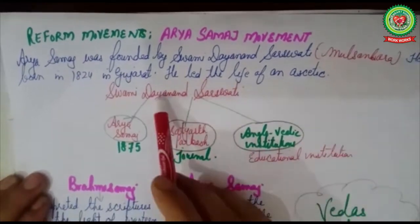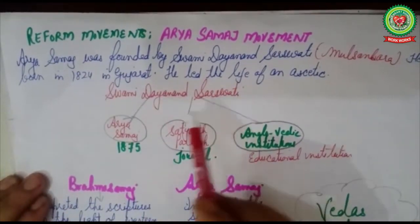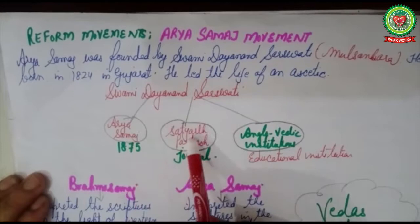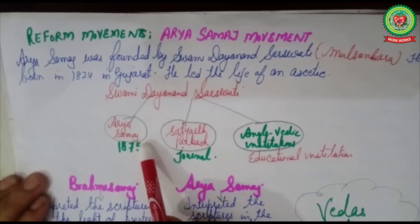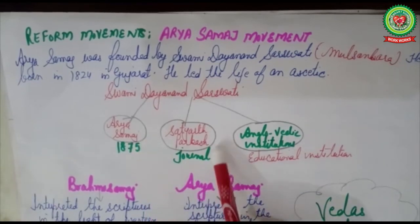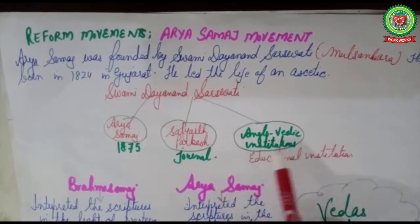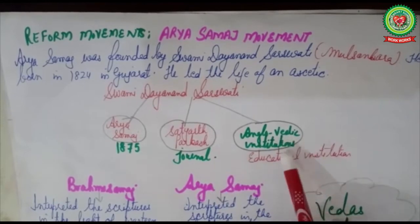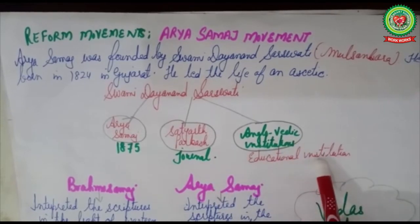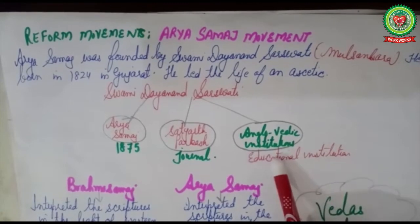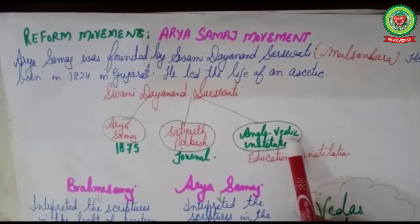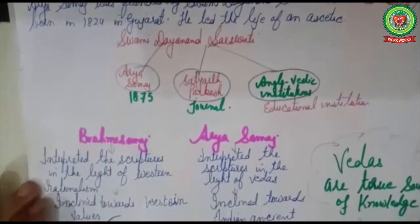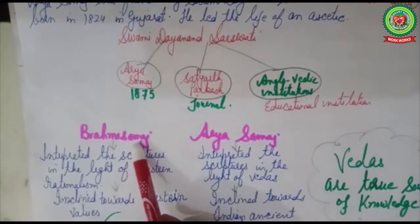Swami Dayanand Saraswati is given credit for mainly three things: he set up Arya Samaj in 1875; to popularize it he published a journal called Satyarth Prakash; and he also set up Anglo-Vedic institutions — educational institutions where ancient Vedic education was given through the English language.